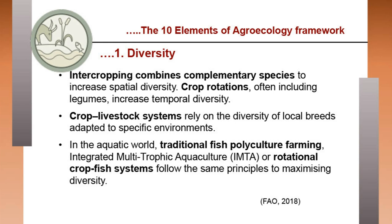Diversity is element number one. Diversification is key to agroecological transitions to ensure food security and nutrition while conserving and enhancing natural resources. Agroecological systems are highly diverse. From a biological perspective, they utilize and optimize the diversity of species and genetic resources — for example, agroforestry systems organize crops, shrubs, livestock and trees at different levels of strata, increasing vertical diversity. If you have a variety of trees, they shelter a variety of birds, insects and animals, all interdependent.